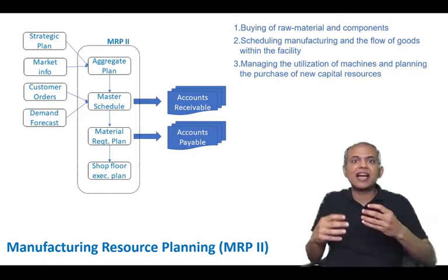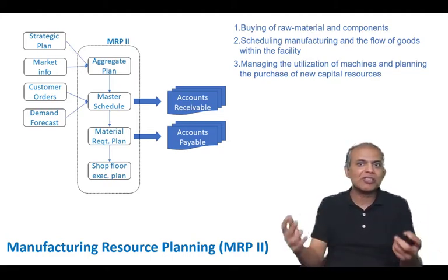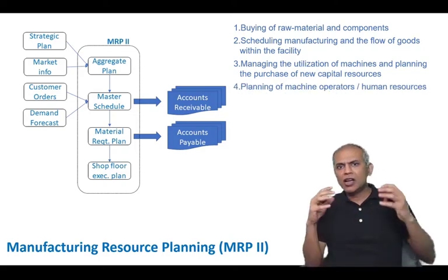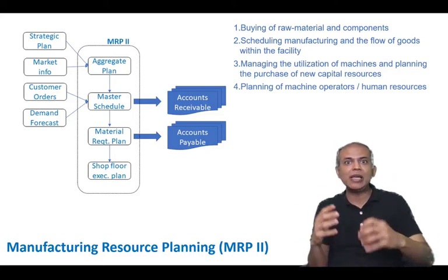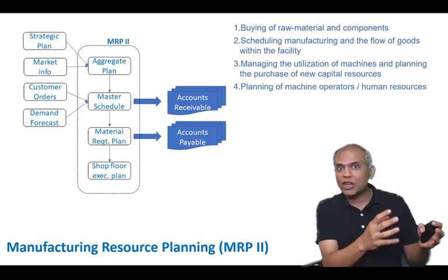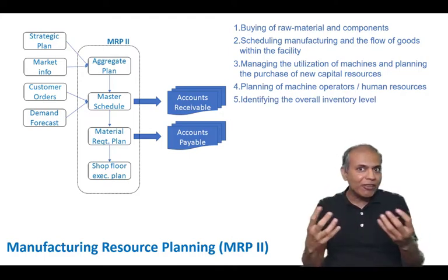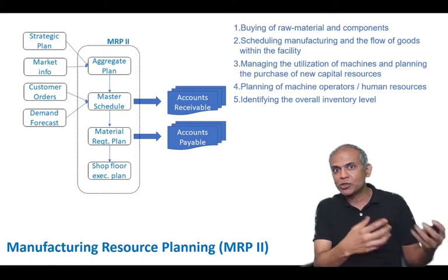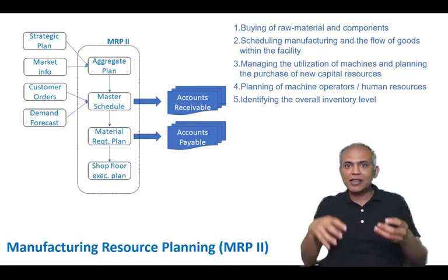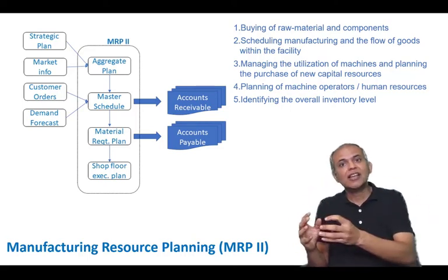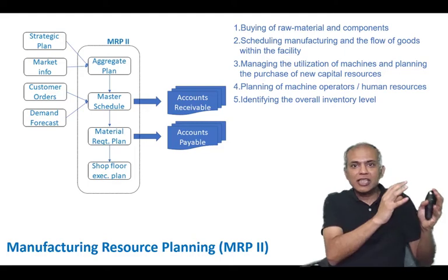MRP2 can also help us decide when we should buy new machines given the kind of customer orders or the rate of change of customer orders we are facing. It can help us synchronize shift schedules so that we have the right amount of machine operators available to man the machines that have been planned to run. It can plan the ideal level of raw materials, components, or semi-finished goods and work-in-progress that we must store, since demand could be non-uniform. MRP2 can suggest that we should build up some inventory during lean seasons, store it, and then use it in peak seasons.